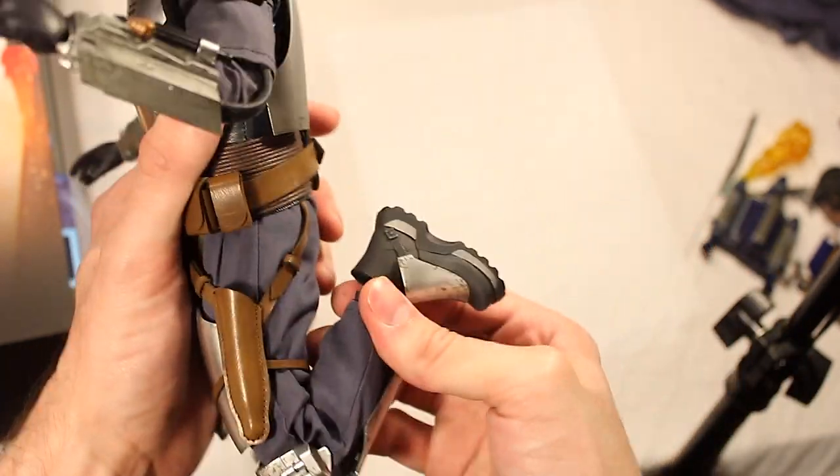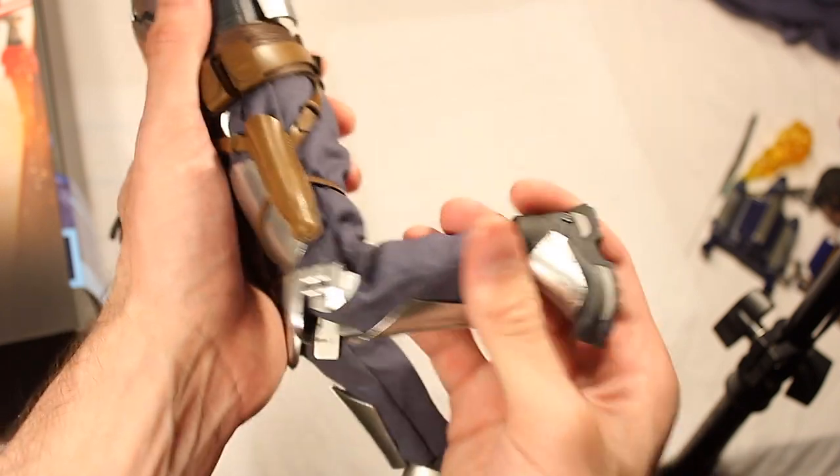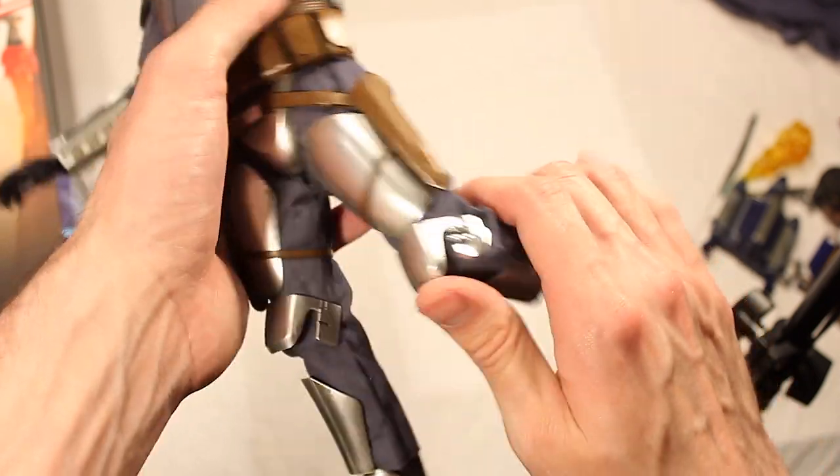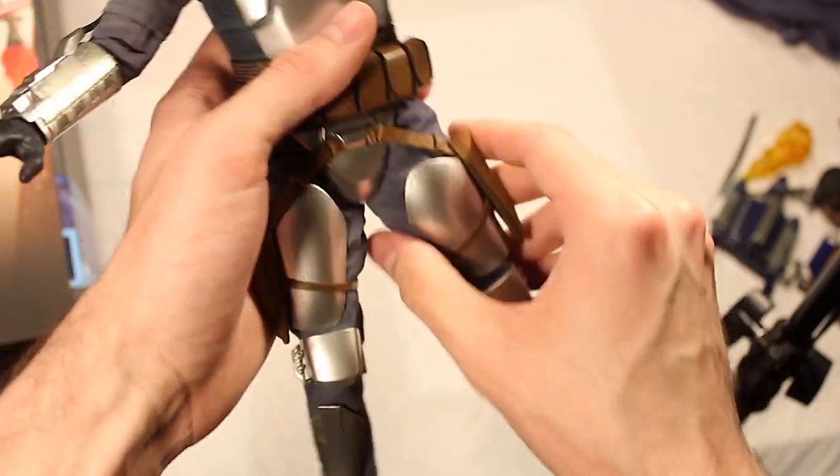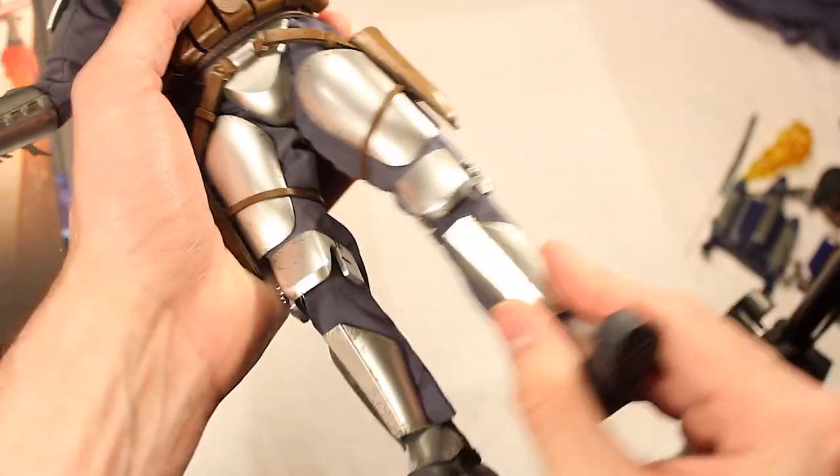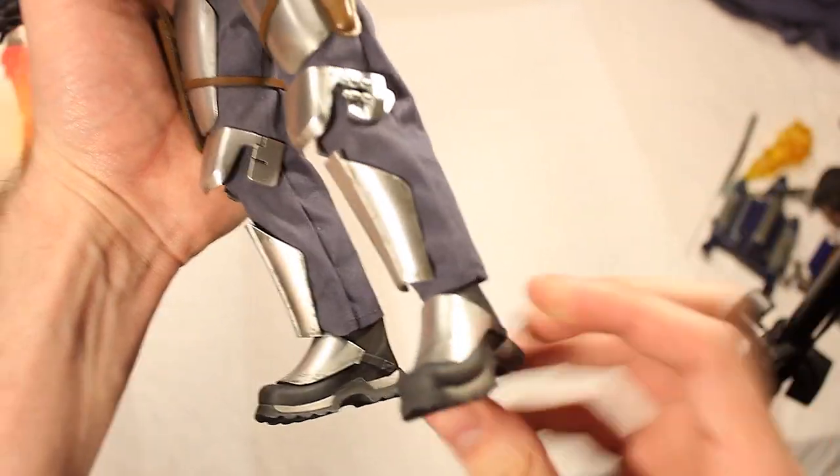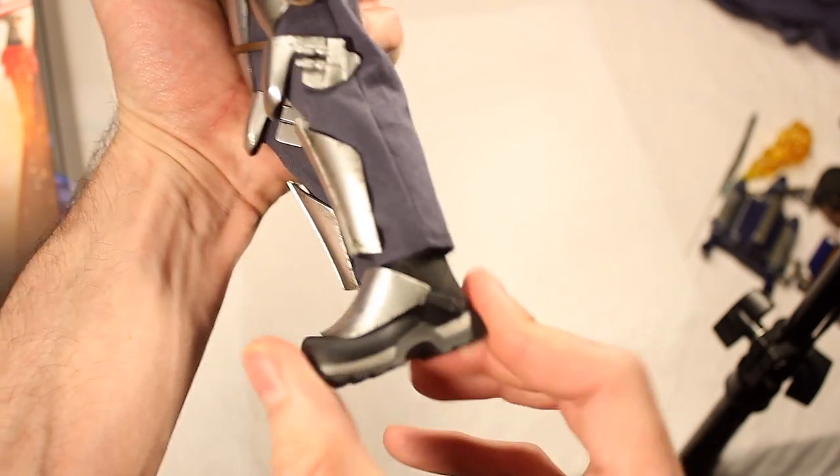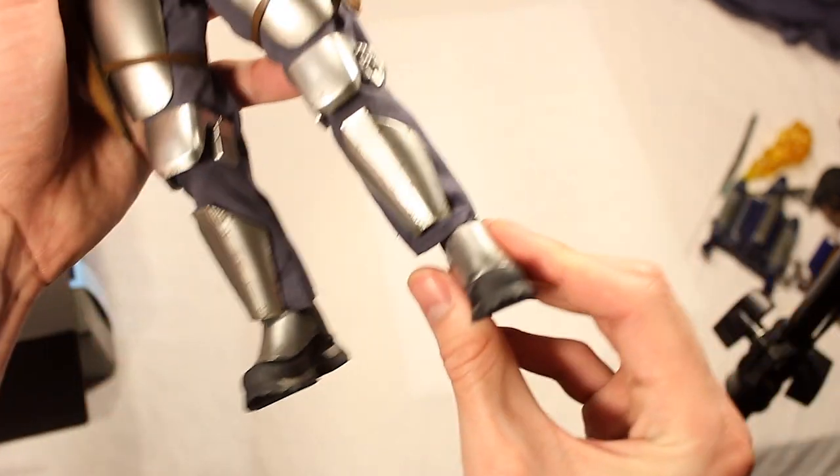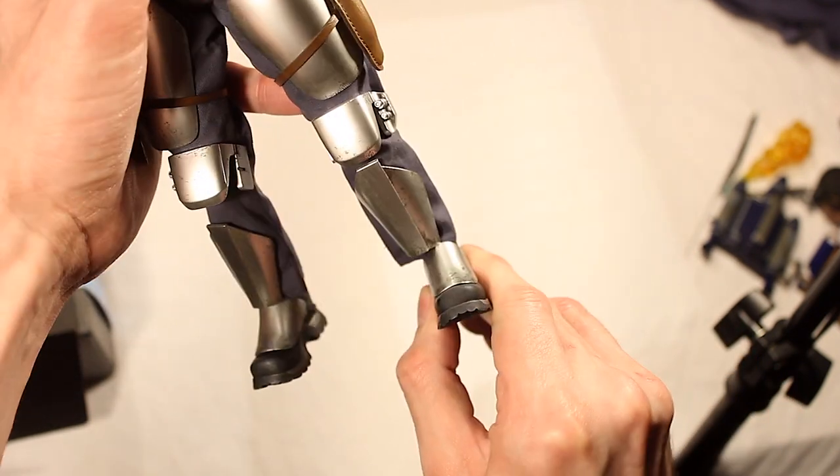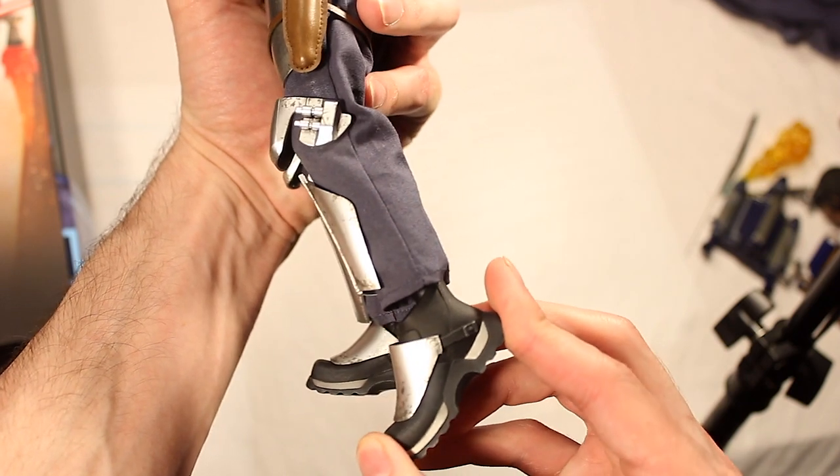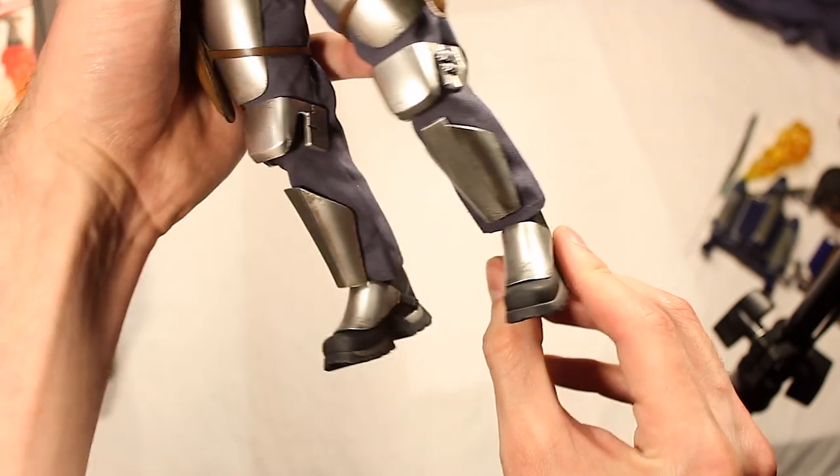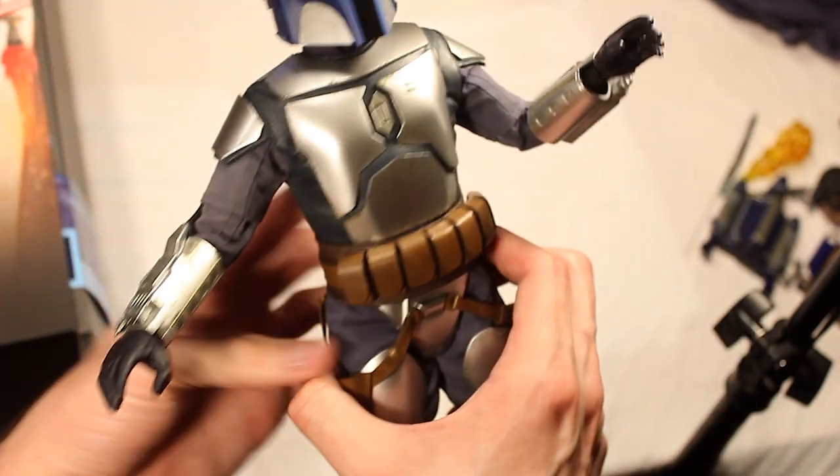So the knees, wow, that can go pretty far. So double on the knees, actually ratcheted, which is awesome. Of course, you can turn the legs and all that stuff. And like I said before, the feet, you know, they have some good articulation. They're just a bit stiff going this way, side to side. It can go up to about there and back to about there. And yeah, that's pretty much, I think that about covers the articulation.